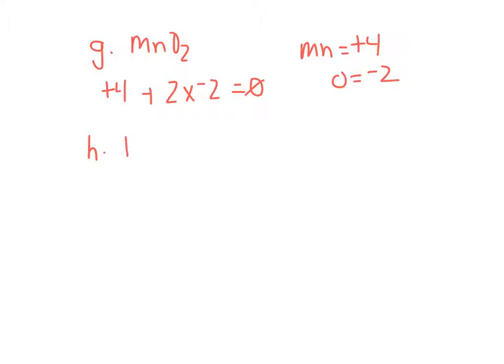Letter H, I have PO4 with a minus 3 charge, so I have 4 oxygen at a minus 2 charge, minus 3 overall, which leaves a plus 5 charge for the phosphorus. So phosphorus is plus 5, each oxygen minus 2.